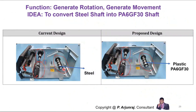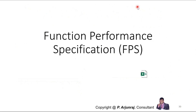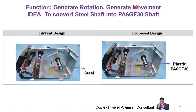This shaft is initially steel. Suppose you go with plastic — it generates rotation and also generates movement. Even when you move to a different grade, from steel to PA6 grade plastic, the rotation should not be affected. So the idea should be such that the function does not get affected — that is how we should approach this.